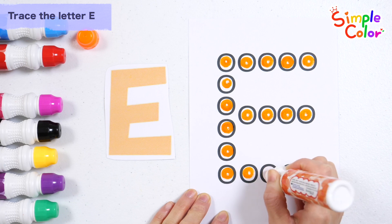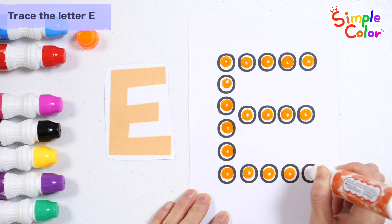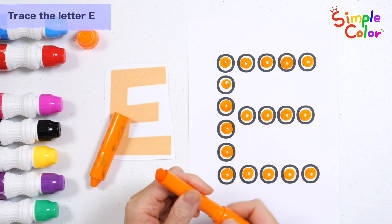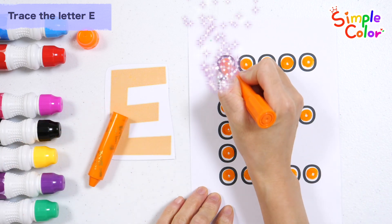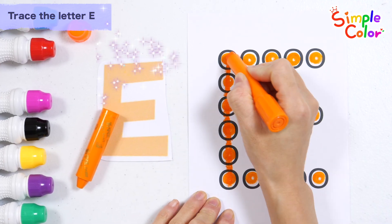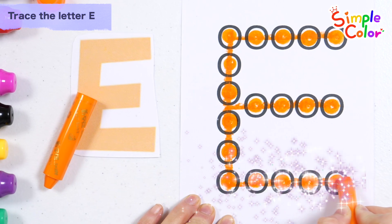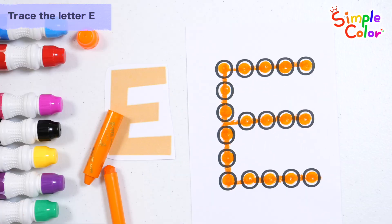This time, shall we write the alphabet E by following the dots with an orange crayon? Alphabet E! Good job!